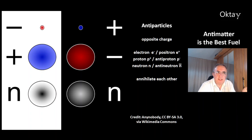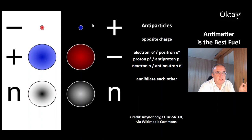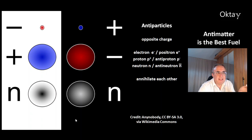This is an overview of antiparticles. They have opposite charge compared to normal particles. For example, at the top left, that's the electron — its antiparticle is the positron. The antiparticle of the proton is the antiproton, and the neutron also has an antiparticle, that's the antineutron. And if a particle and its antiparticle come together, you get annihilation and conversion to energy.